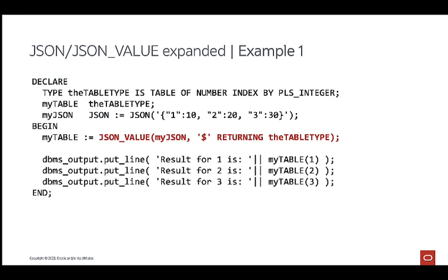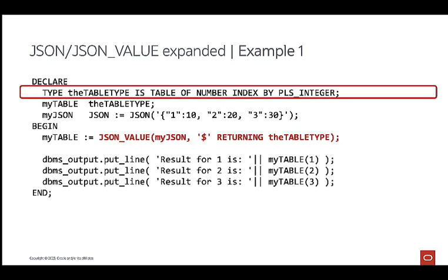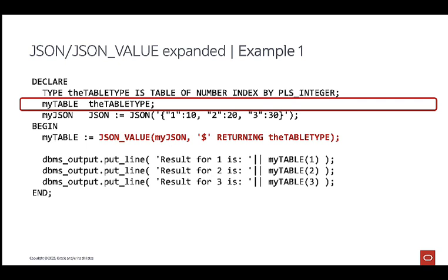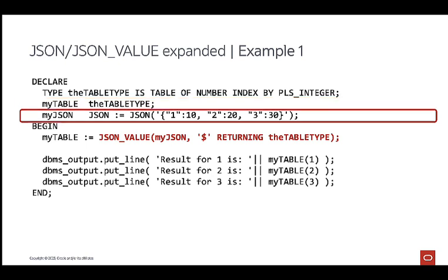Here's an example of transforming a JSON array into a PL/SQL aggregate. I have chosen to use a table type, but I could have used a varray as well because there are only single elements of data with a single field. First, I declare a new type called the table type as a series of values of type NUMBER, indexed by a number. Based on this table type, I declare a variable called myTable. Then I create a variable called myJSON of type JSON. The JSON data type is a new data type in Oracle since 21c, specifically for JSON data.